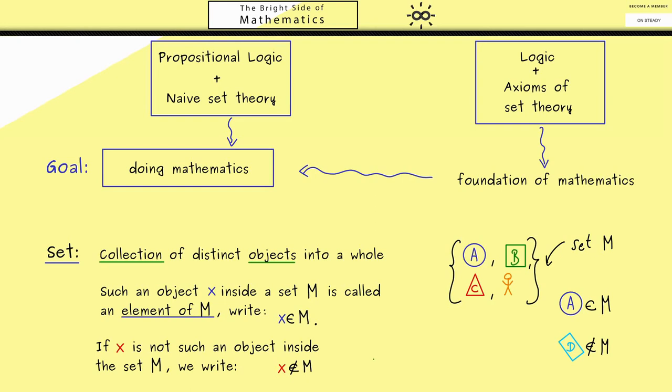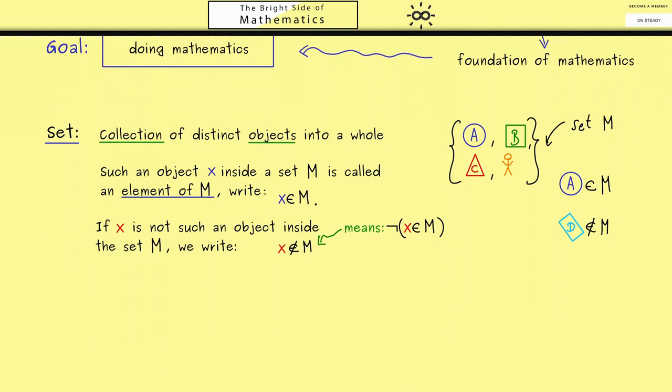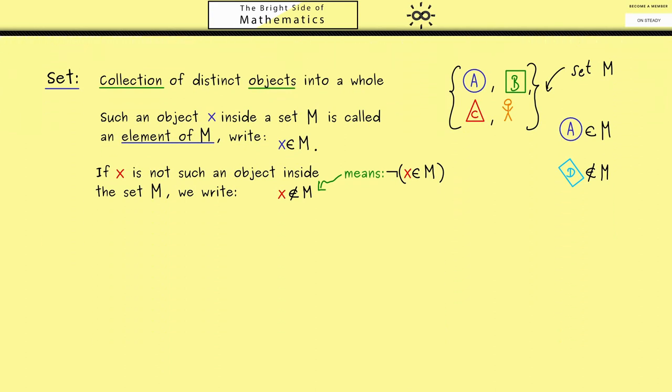Now at this point because you know some logic, I can say that this new notation is just a short notation for the negation of this statement. There you have it, we see the element relations as logical statements. And because a set is defined by these element relations we can just define a set by giving all the elements. For this one usually uses the curly brackets as we did before.